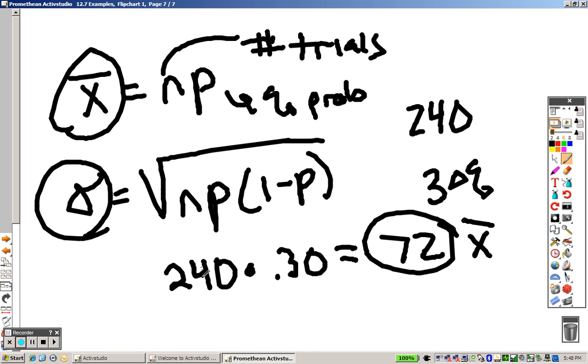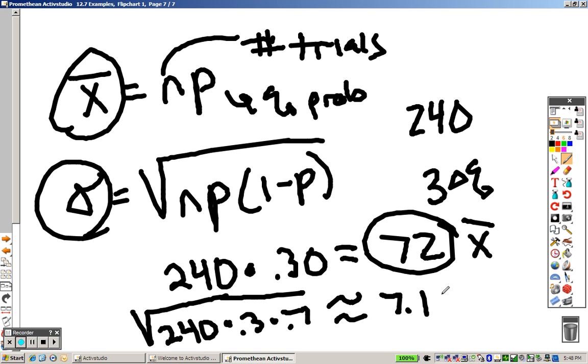And, over here, your standard deviation, you would take 240 times 0.3, and 1 minus 0.3 is 0.7. So, basically, it is the square root of 240 times 0.3 times 0.7, and that gives you roughly 7.1 is the standard deviation.